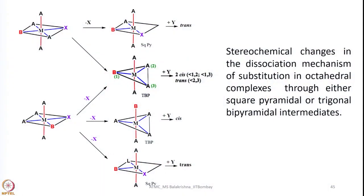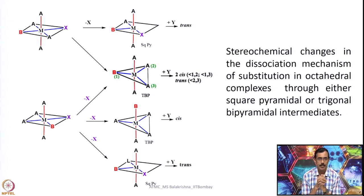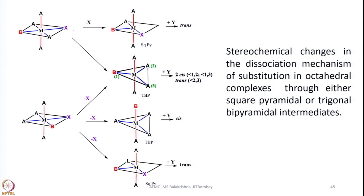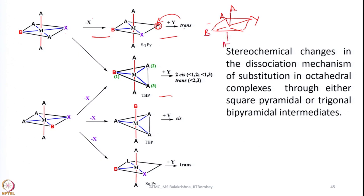Now let us look at the stereochemical changes seen in a dissociative mechanism. In the dissociative mechanism, we can think of two possible geometries: square pyramidal and trigonal bipyramidal. Let us assume the chances are 50/50 for forming square pyramidal as well as TBP. When it forms square pyramidal geometry, X departs and the position is vacant; Y comes in and is established here. Since Y comes where X was, and B is in its original position, we get a trans compound.